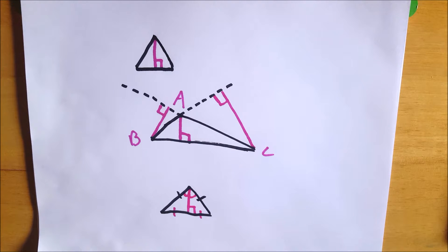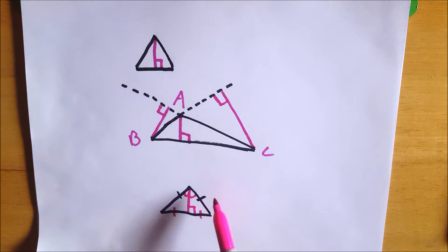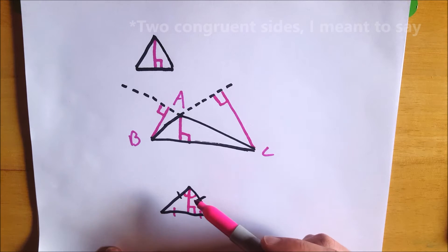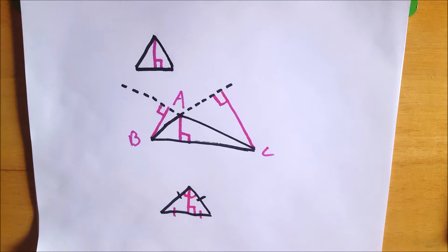The altitude in an isosceles triangle that has an endpoint adjacent to the two congruent angles cuts the isosceles triangle into two congruent right triangles by side angle side or angle angle side. You could use a few postulates there to show that.